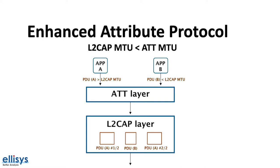So in this example, we have application A that is sending a PDU larger than the L2CAP MTU size, which means it will be broken up into chunks of sizes up to the L2CAP MTU. This will allow the PDUs from application A and application B to be interleaved instead of application A's PDU being blocked by application B's PDU.